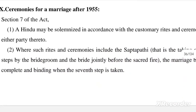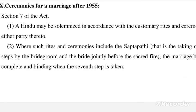Next is the ceremonies of marriage. Ceremonies for a Hindu marriage after 1955 are covered under section 7. A Hindu marriage may be solemnized in accordance with the customary rites and ceremonies of either party thereto. Where such rites and ceremonies include the Saptapadi — that is, the taking of seven steps by the bridegroom and bride jointly before the sacred fire — the marriage becomes complete and binding when the seventh step is taken.